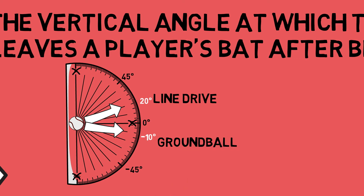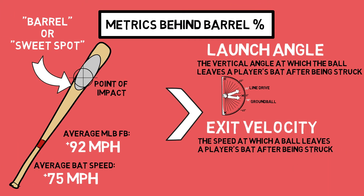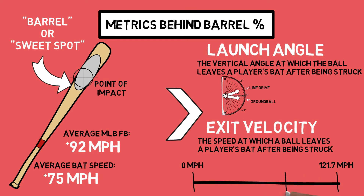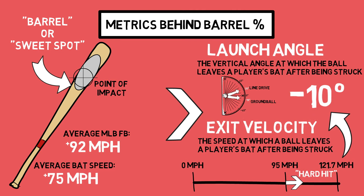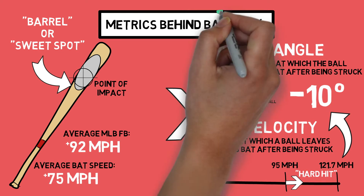We can then pair launch angle with exit velocity, which measures the speed of the ball after it has been struck by the batter, to further define quality contact. Exit velocity can range from zero miles per hour to the current hardest hit ball in the Statcast/Hawkeye era of 121.7 miles per hour. We can define balls hit above 95 miles per hour as hard hit. However, that information isn't quite good enough on its own, because a ball hit above 95 mph can also be hit at a negative 10 degree launch angle, typically resulting in a ground out. That's where barrel percentage comes into play.